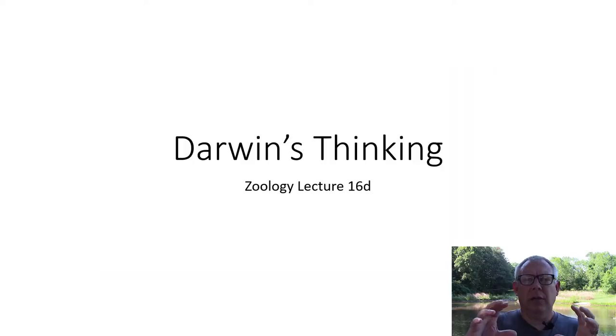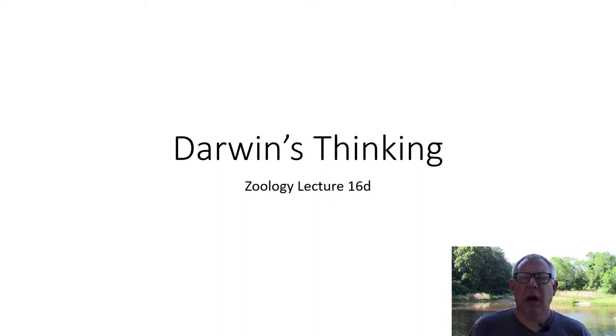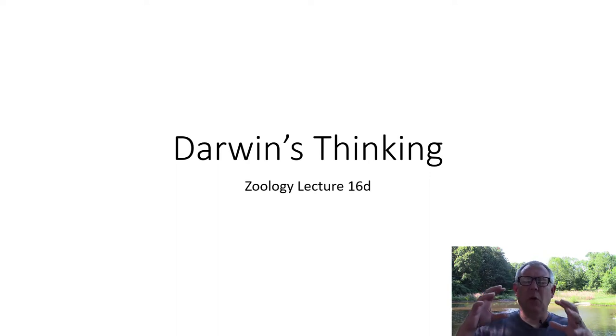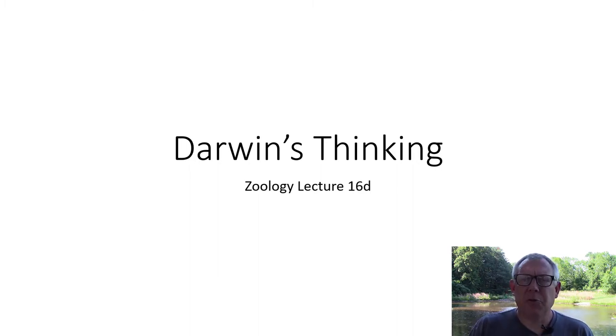Hello everyone. I've got one little thing I want to add to our lectures about evolution and natural selection, just to develop and explain Darwin's thinking and how he put this all together. I like this because it comes from Ernst Mayr, a famous biologist, who organized some simple arguments and inferences that Darwin used to explain natural selection. It's very organized, very logical, and it helps put this straight in your brain.